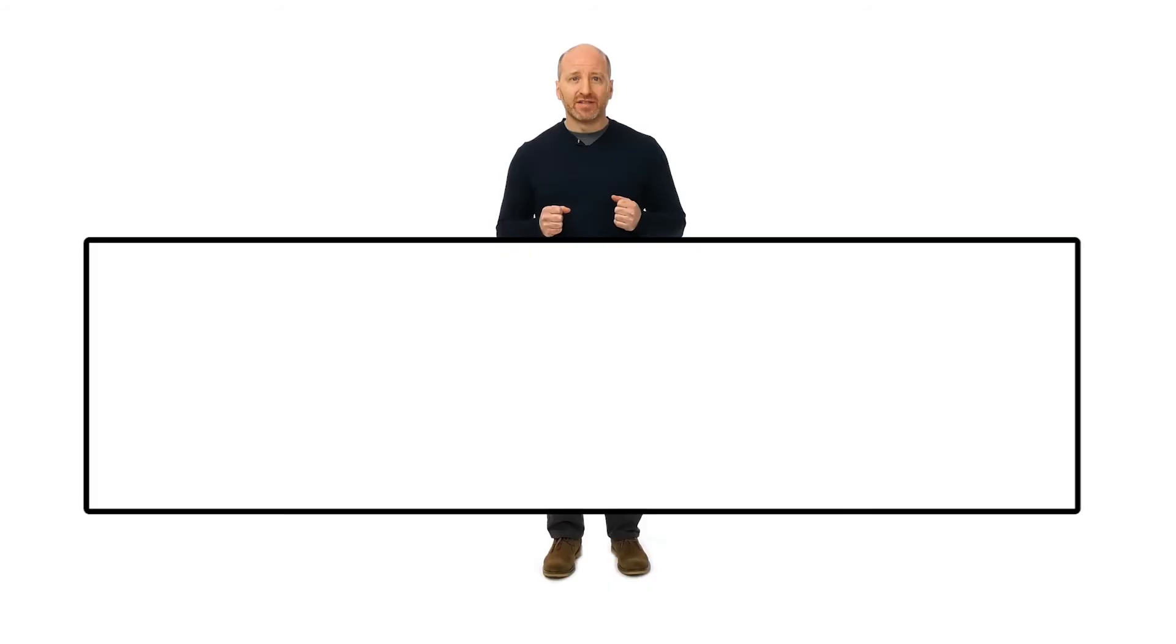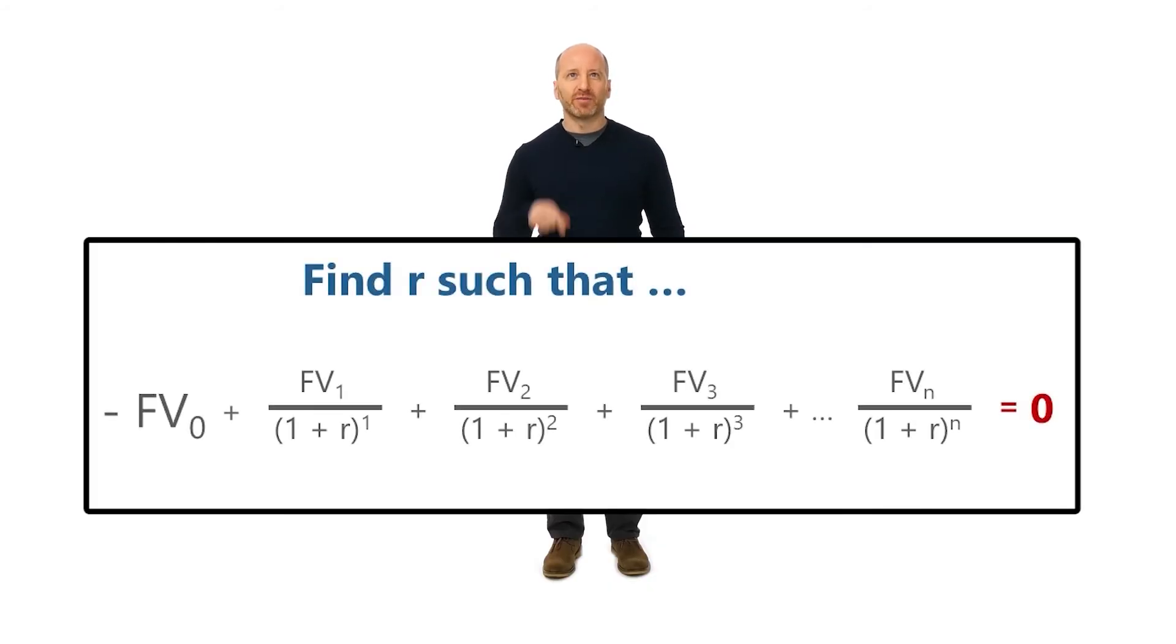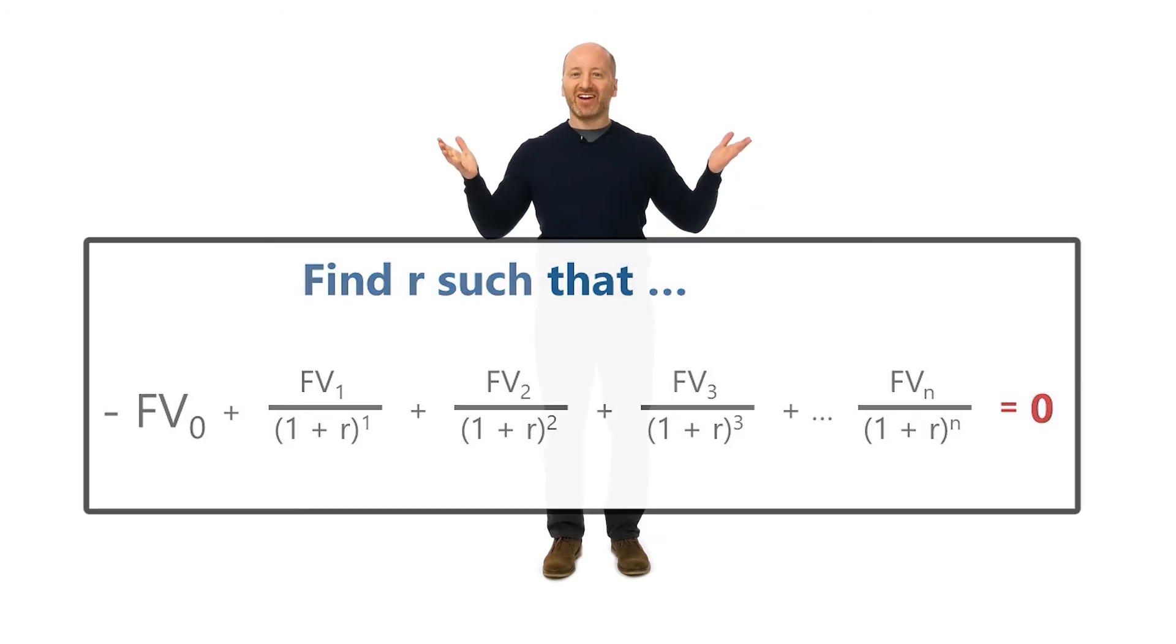If you want to understand what Excel is doing behind the scenes, just take a look at the formula below right here. Excel is just churning through a set of steps to examine all of the future cash flows and then discount them to the present at a specified discount rate and then take the sum just like we did in that lesson on present value. And Excel is just going to keep changing that discount rate until it ultimately finds the discount rate that gives an NPV of zero. And that's the IRR.